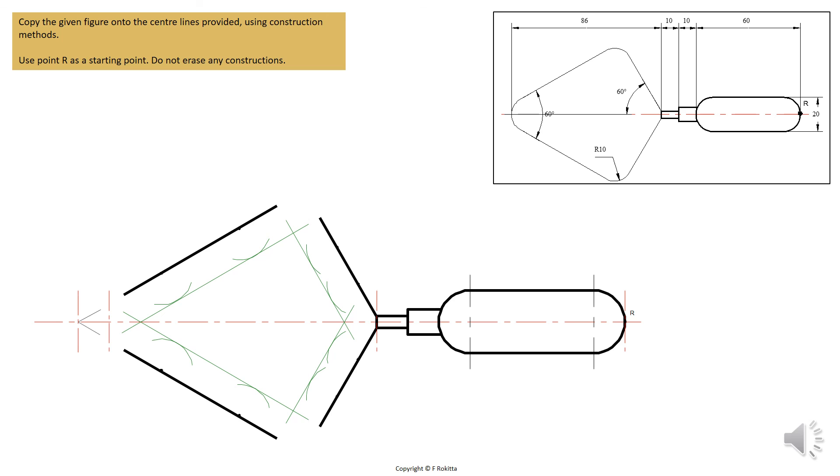Make sure that the construction lines intersect perfectly with one another. This will create the center point of the arcs that we want to draw in the next step.